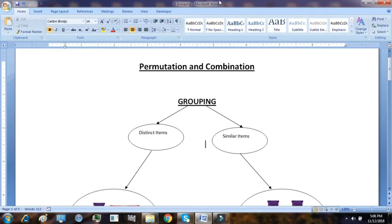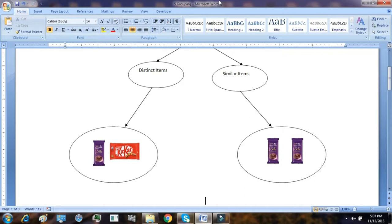Next topic in permutation and combination is about grouping. Suppose we want to group some type of items, like I have 10 items and I want to make 2 groups of 5 items each. How can grouping be done on different types of items? Now, items can be the same type of items or they may be different type of items. So grouping can be categorized into two: grouping of distinct items and grouping of similar items.